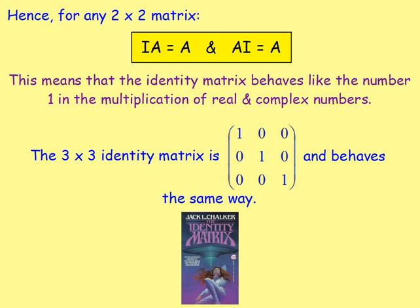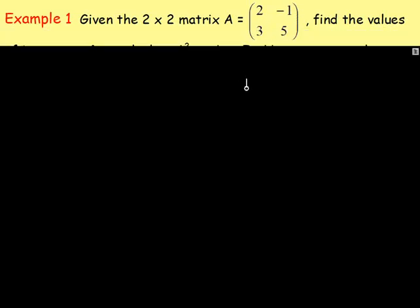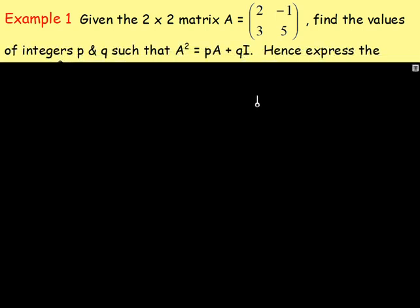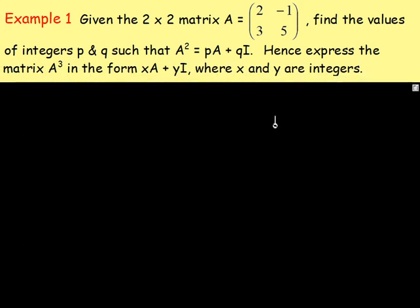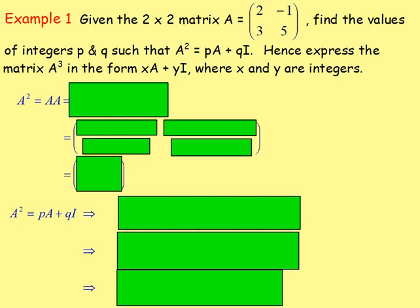Let's try some examples then, looking at the identity matrix. Example 1: Given the 2x2 matrix A, which is [2, -1; 3, 5], find the values of integers P and Q such that A² equals P times A plus Q times I. And hence express the matrix A³ in the form XA plus YI, where X and Y are integers. To do this, first of all we've got to find the values of P and Q such that A² equals PA plus QI.